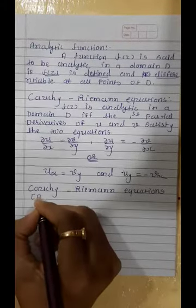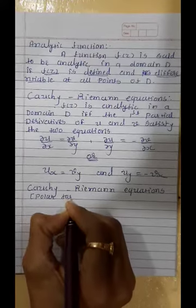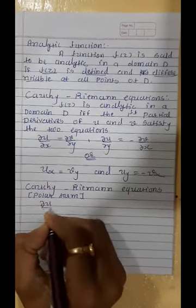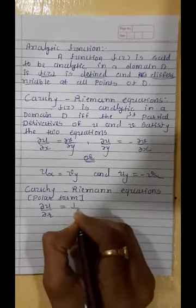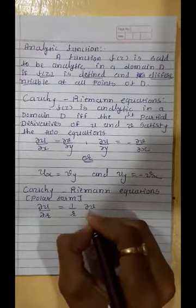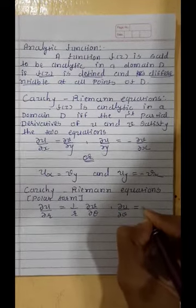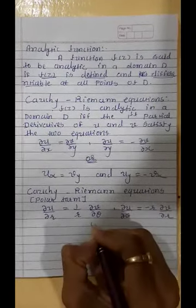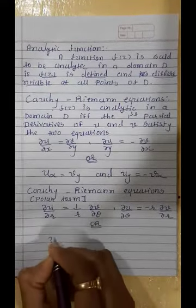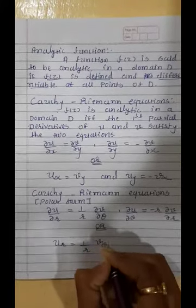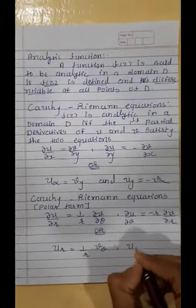The Cauchy-Riemann equation in polar form is: ∂u/∂r = (1/r)·∂v/∂θ and ∂u/∂θ = −r·∂v/∂r. This can also be written as uᵣ = (1/r)vθ and uθ = −r·vᵣ.